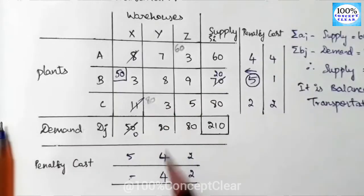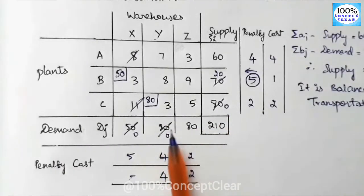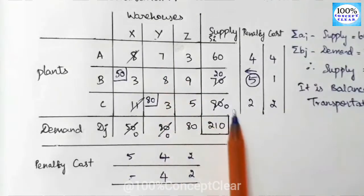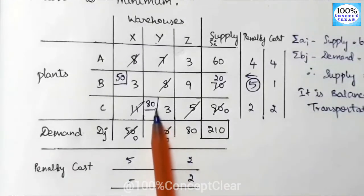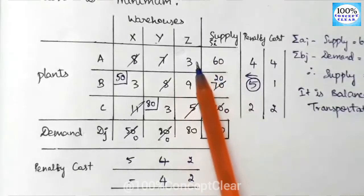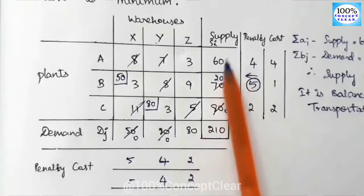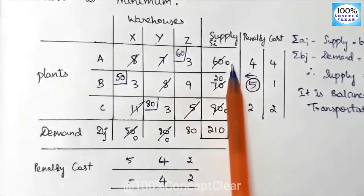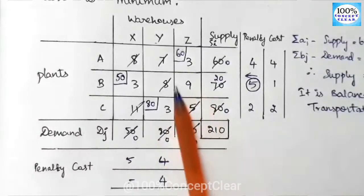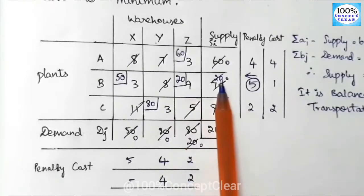That's why we allocate 80. We cancel the supply and demand accordingly. Adding 0, supply becomes 0 and we cancel the third row. In the remaining cells with values 3 and 9, we select the least value. Supply is 60 and demand is 80, so the least is 60 — we allocate 60, and 80 minus 60 equals 20 remaining demand.